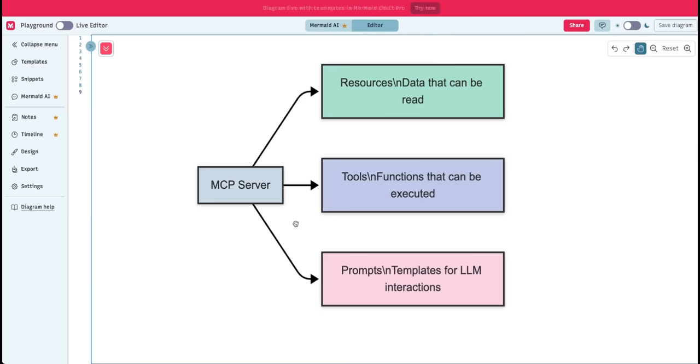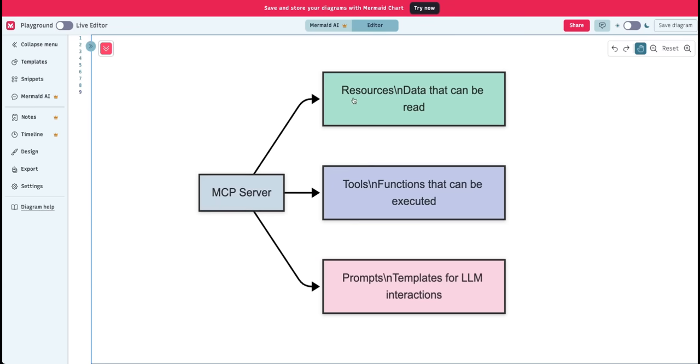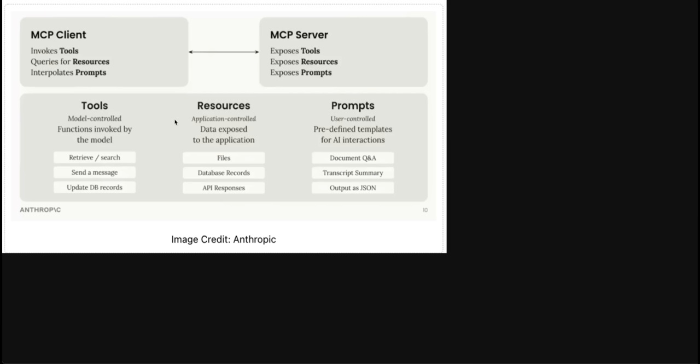Next, we're going to look at the three main components of an MCP server: resources, tools, and prompts. Resources are file-like data that can be read by the client, think about these as API responses or file contents. Then you have tools or functions that can be called to perform actions like sending an email or querying a database. That's the list of tools that are available on the MCP server. And then to orchestrate everything, you have prompts. These are templates for structuring interaction with the LLMs.